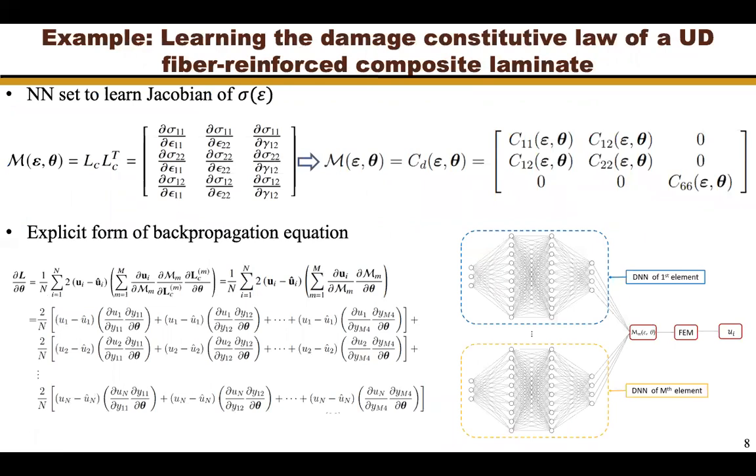The PDNN is set to learn the Jacobian of the stress-strain relationship. It has the general expression shown here. Since the lamina can be assumed to be transversely isotropic, we can simplify the Jacobian into this expression. For this problem, the neural network structure is expressed in this figure. In this structure, each element has its own neural network because the degree of damage of the elements can be different. However, all these neural networks share the same weights and biases. Based on this neural network structure, we derive the explicit form of the backpropagation equation, which is shown here.